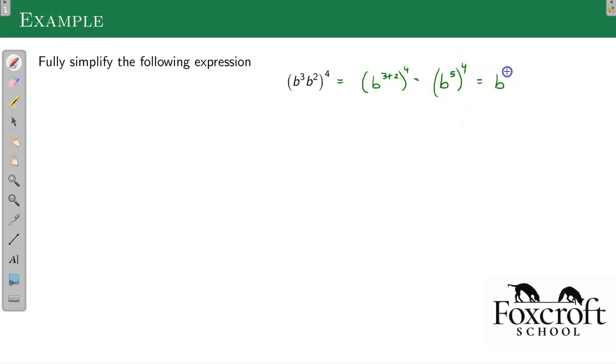And then we have this double exponent, so we multiply. And that's b to the 20th. So I'd say these steps, writing them, are kind of optional. These ones I'd kind of want to see.